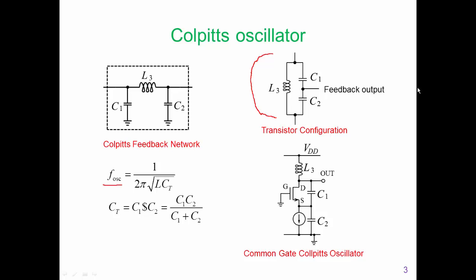In a common gate Colpitts oscillator configuration, this is how those elements would appear. The output of this amplifier is the drain, and the input is going to be the source because the gate is held at an RF short circuit. There may be other elements that apply bias, but we will use large capacitors to provide an RF short circuit and large inductors to provide an RF open circuit. VDD is also RF ground, so L3 is across C1 and C2. L3 is between the output and ground, and the feedback point is between C1 and C2, attached to the source.